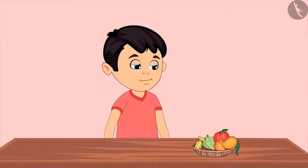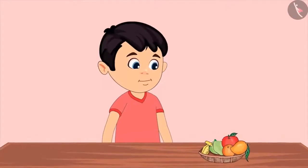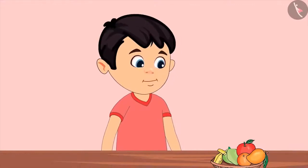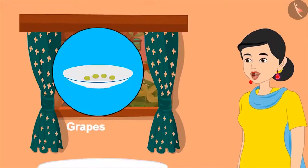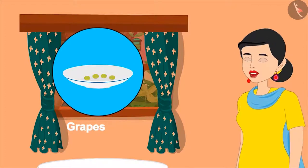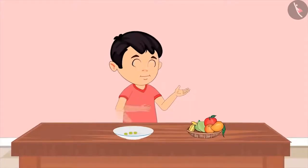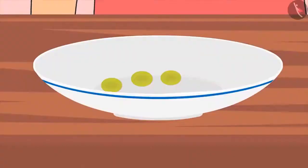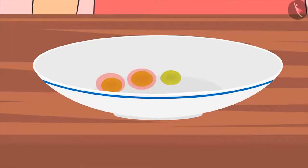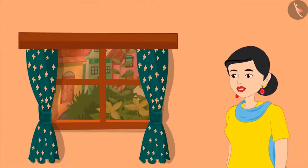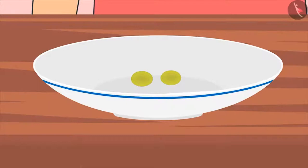Now Chotu has started eating fruits instead of sweets. Let's see which fruit he wants to eat today. Mom, please give me some grapes to eat. Pinky had eaten grapes and there are only four left. Have these, I will bring more later. I have eaten one out of four grapes. Now how many grapes are left? If I ate one out of four grapes, then now there are one, two and three — that means three grapes.